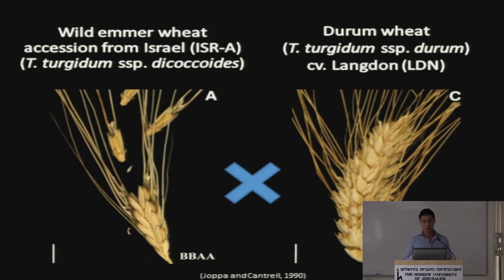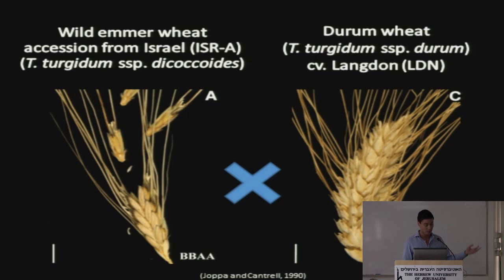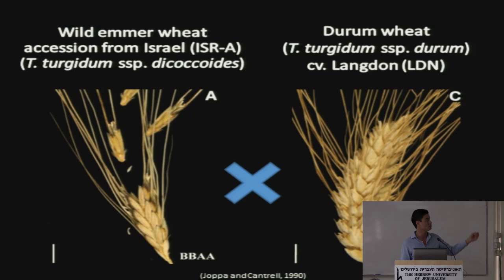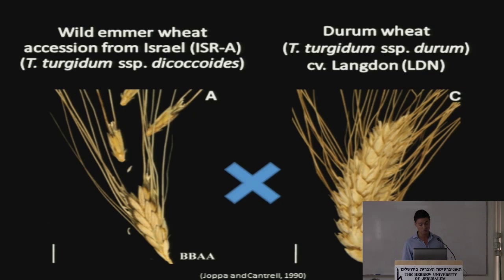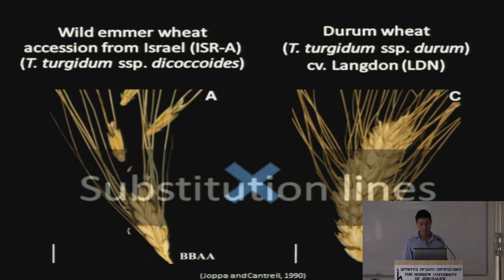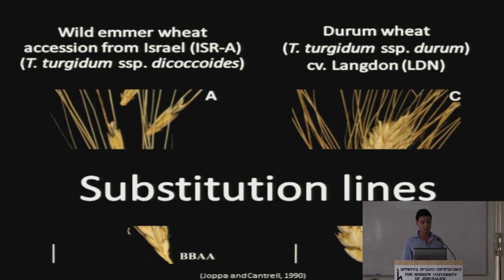In order to test whether this delay indeed impacts drought tolerance, in the 1990s Yopan Cantrell published work where they crossed wild emmer wheat from Israel with a commercial variety called Langdon, a durum wheat, and created substitution lines.